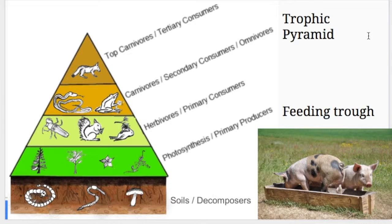Now trophic means feeding. So over here this picture of these pigs, they are eating out of a feeding trough. That trough, that word right there, is the same root word as trough in trophic pyramids.